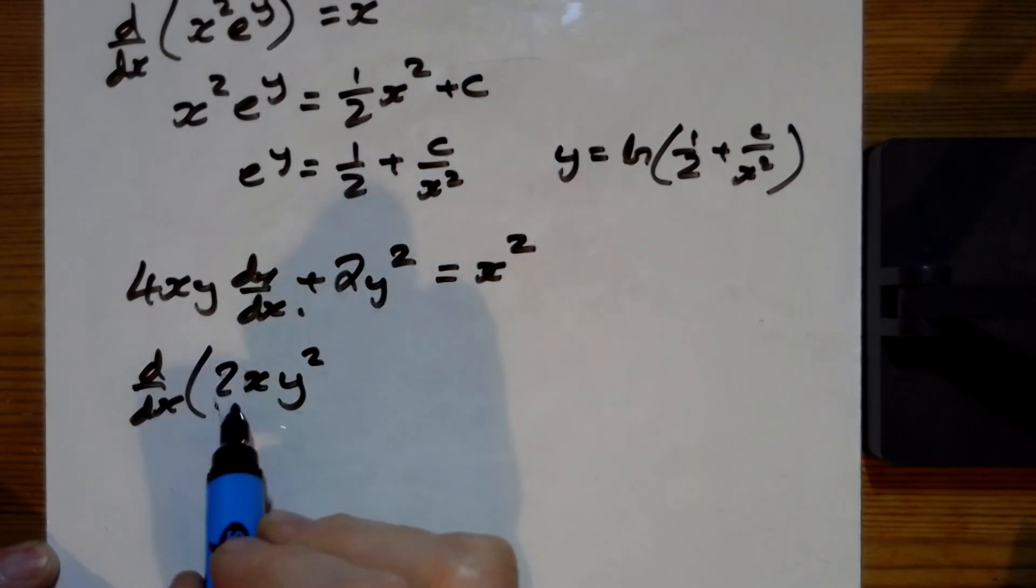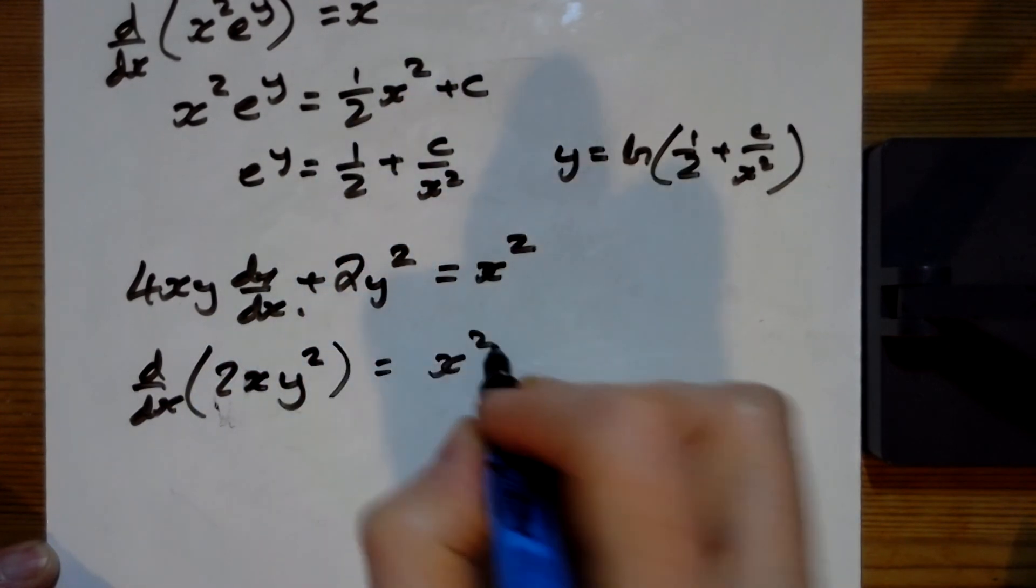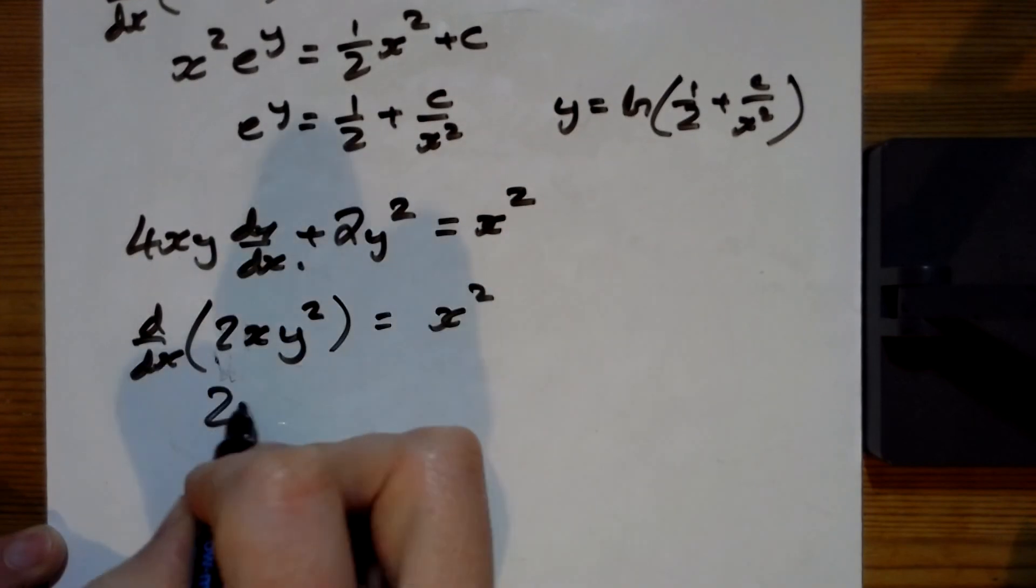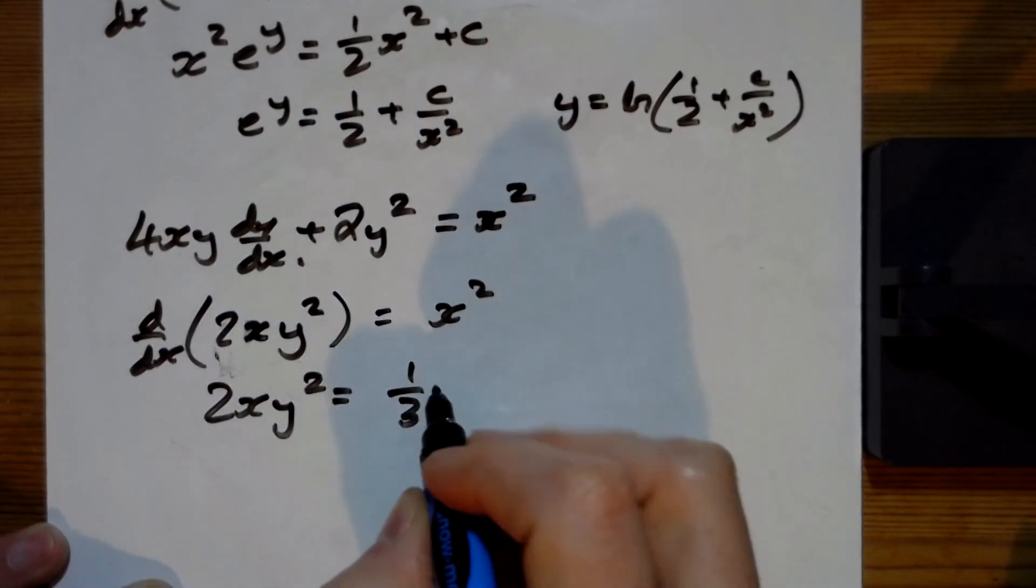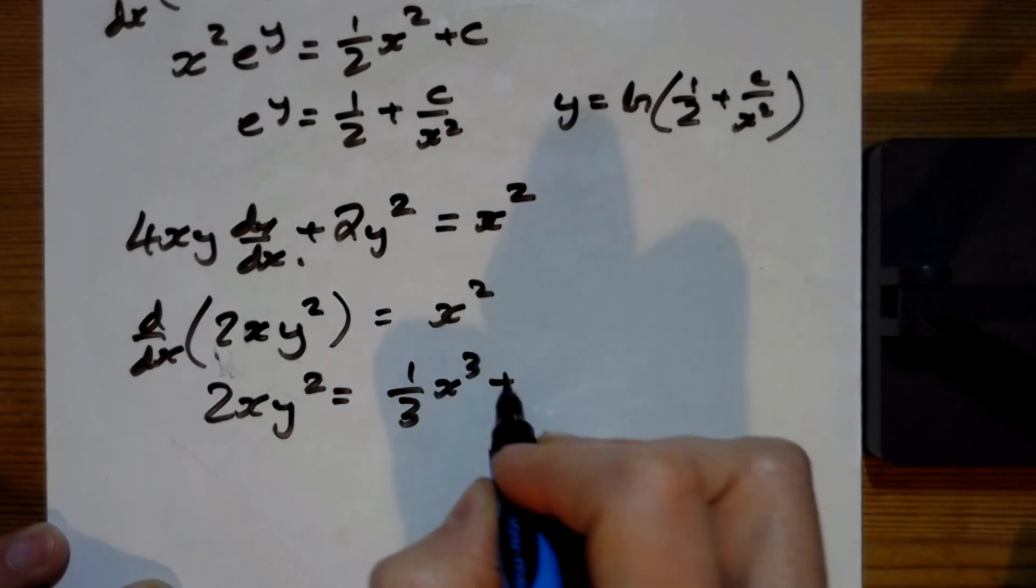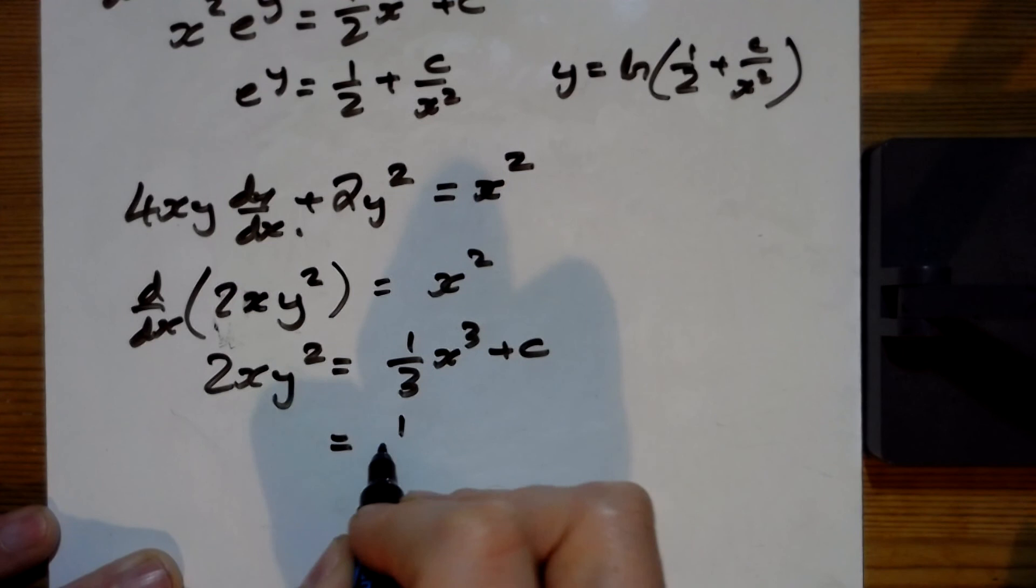And here I've got 4xy dy, but yeah, that works. And x squared. So integrating both sides gives us this, 1 third x cubed plus c. Let's divide it all by 2x.